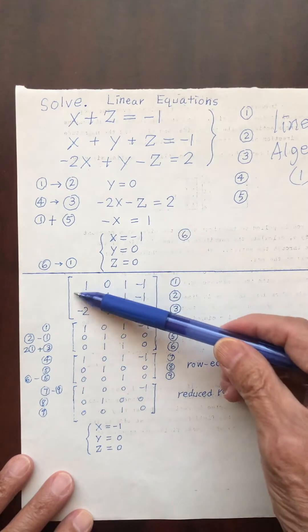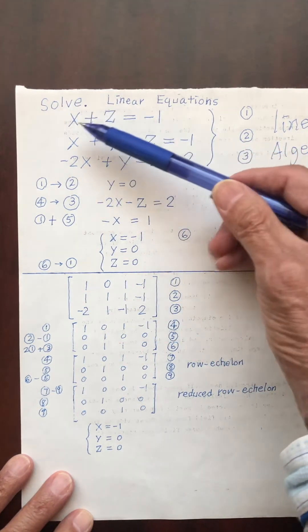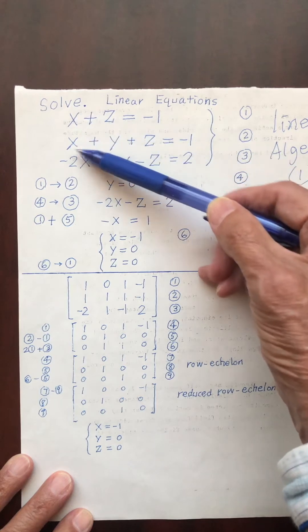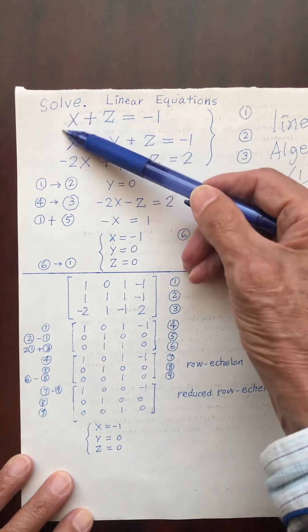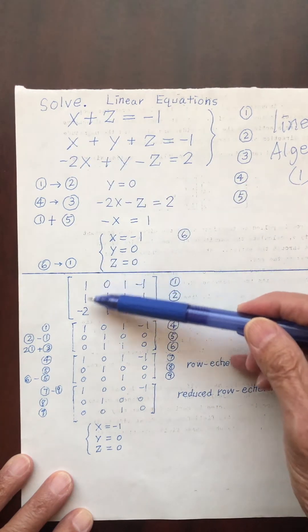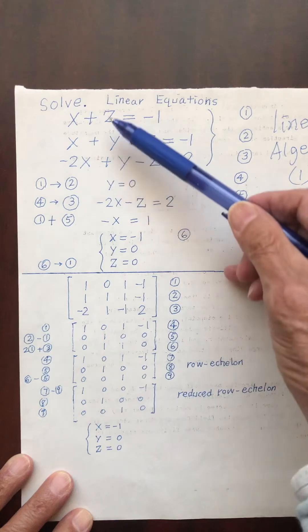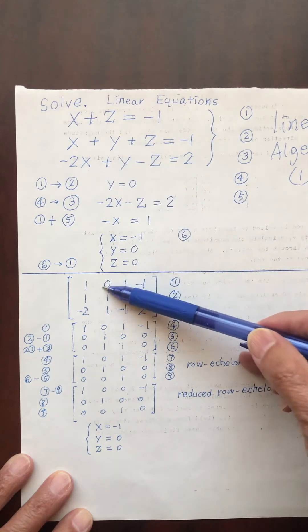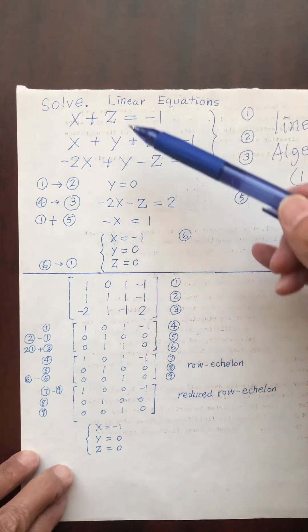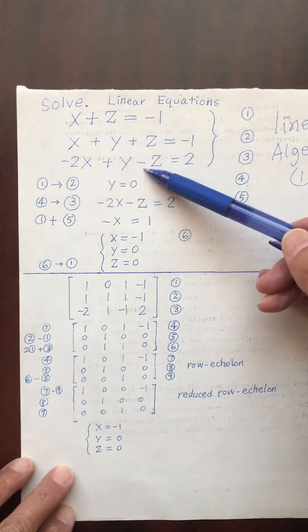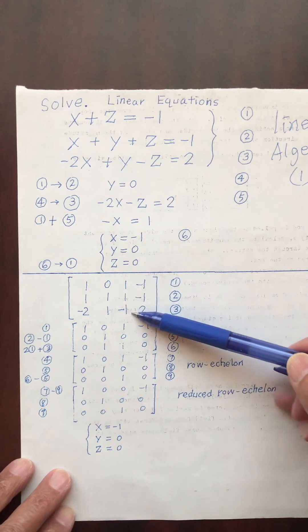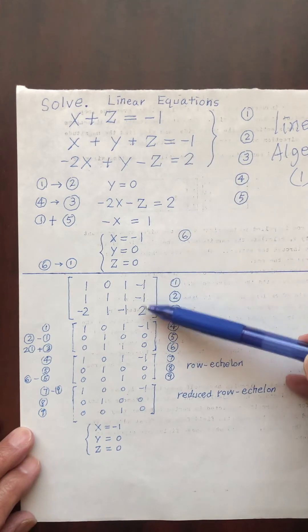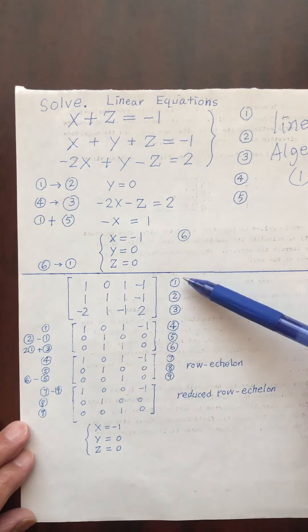In the matrix method I write down the augmented matrix. I just write the coefficients before the variables — I do not need to write x, y, z. So for x: 1, 1, negative 2. For y: 0, 1, 1. For z: 1, 1, negative 1. And the right-hand side column gives negative 1, negative 1, 2. I label the rows 1, 2, 3.